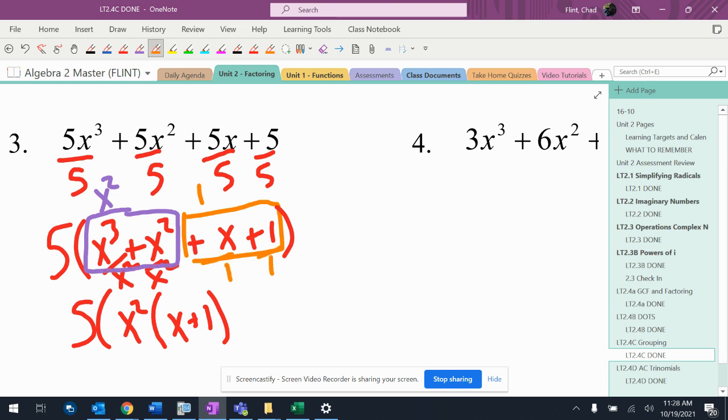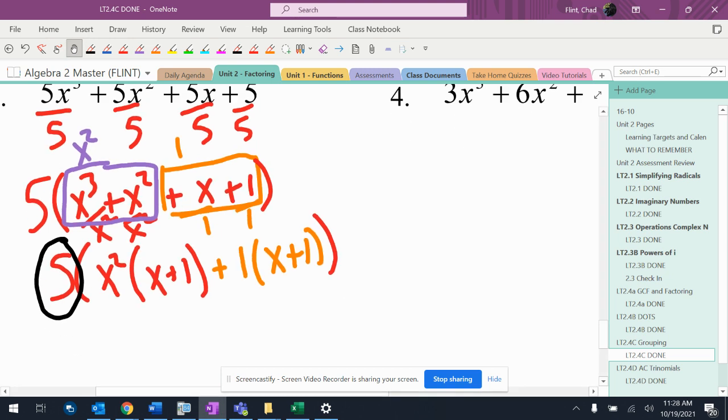I'm going to take a 1 out of each of these, so I'm going to have +1 times (x + 1). Now the really important thing here, and what I messed up, is this 5 lives out front of everything that's going to happen inside these parentheses. Don't stuff it back in there. I had it go with the x², and that's not how this works.